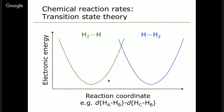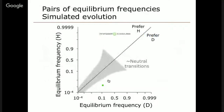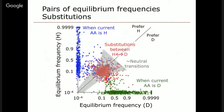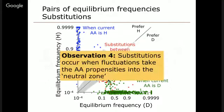To get us back on track: the substitutions occur when fluctuations arising from sequence changes at other locations take the amino acid propensities into the neutral zone — the zone where the equilibrium frequencies for the two amino acids are effectively equal — and the substitutions then take place under these neutral conditions.